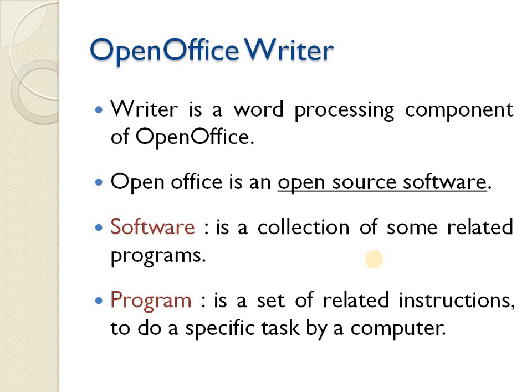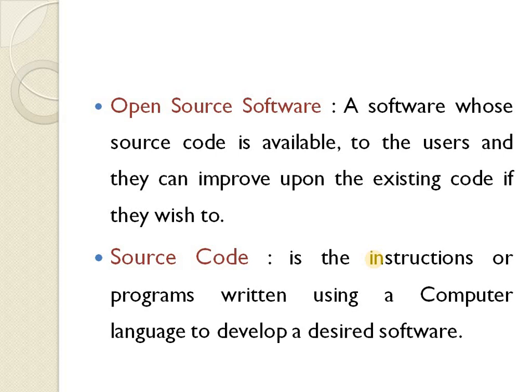Now, what is open source software? A software whose source code is available to the users, and they can improve upon the existing code if they wish to. The code of the software is freely available, and if you want to make any modification, you can contribute your work to the software community. Source code is the instruction or program written using a computer language to develop a desired software.